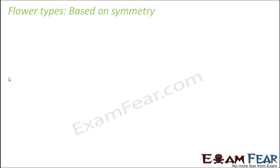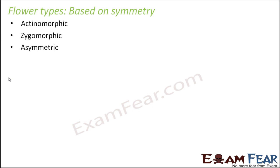Let us look at flower types based on symmetry. When we think of symmetry, types like radial symmetry, bilateral symmetry, or no symmetry come to mind. There are three types of flowers based on symmetry: actinomorphic, zygomorphic, and asymmetric. These are the three types based on the kind of symmetry they exhibit.